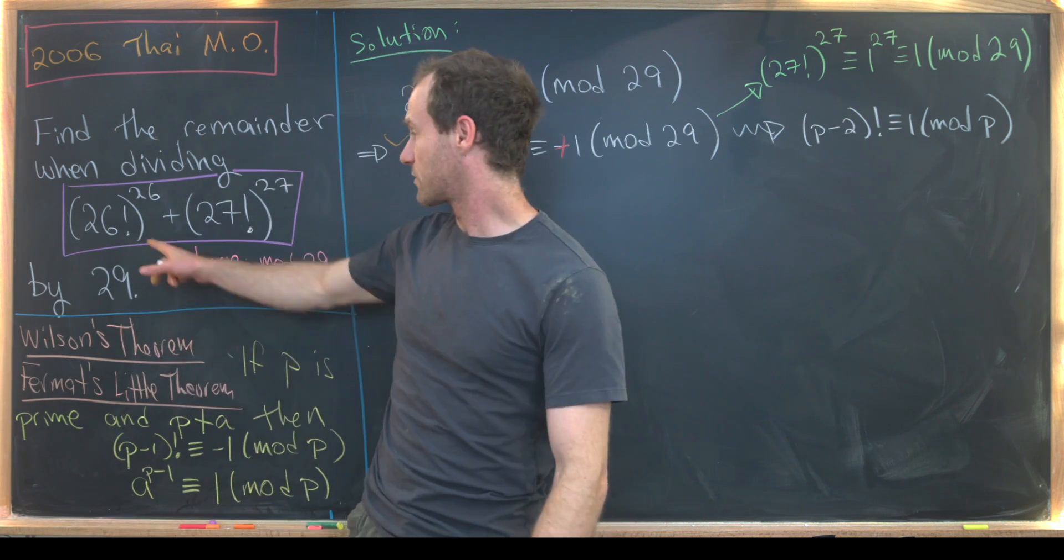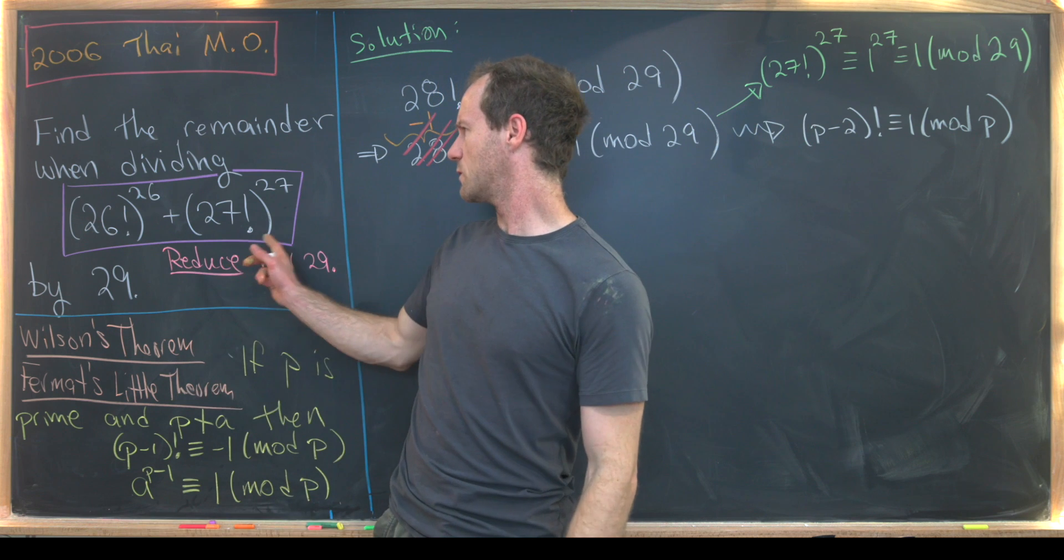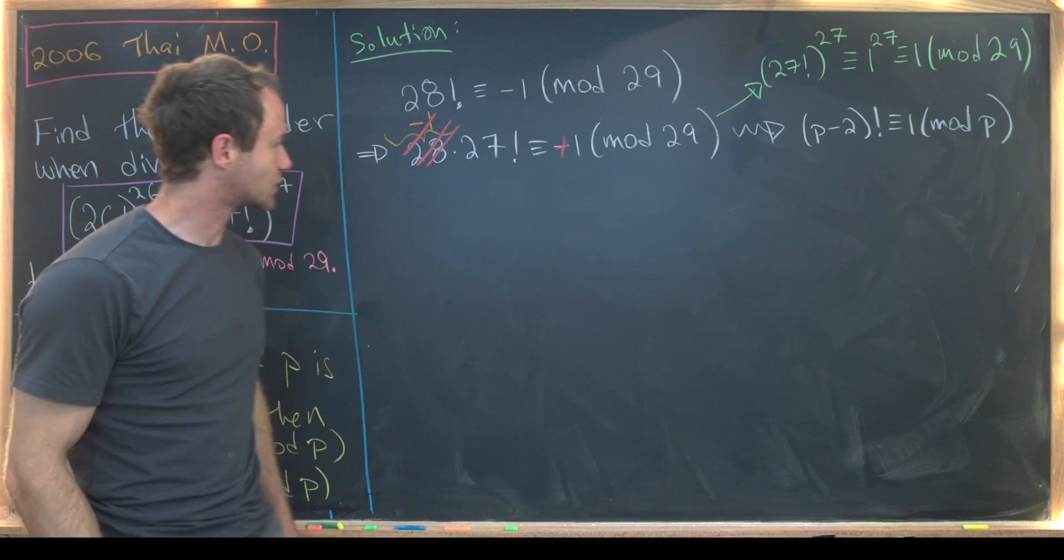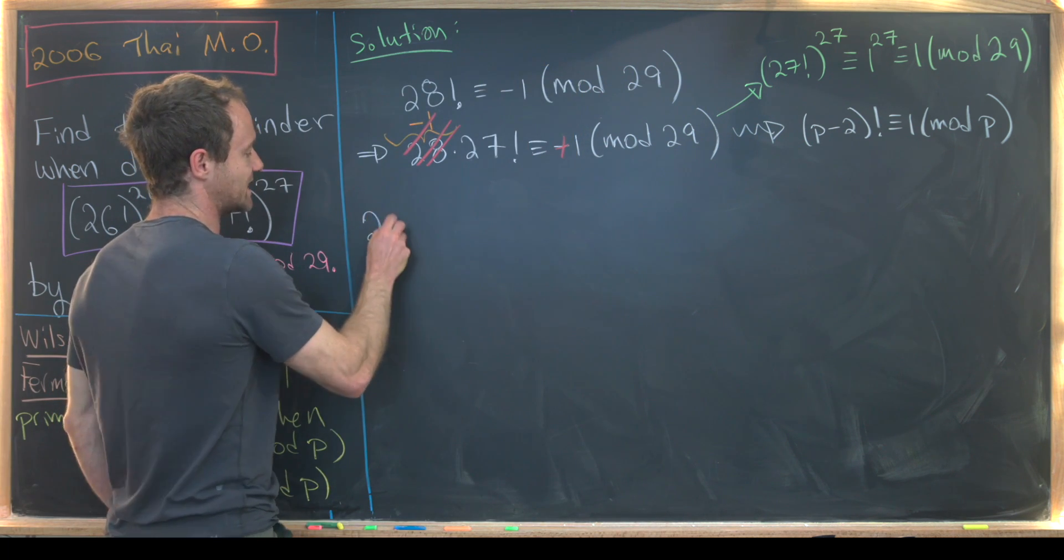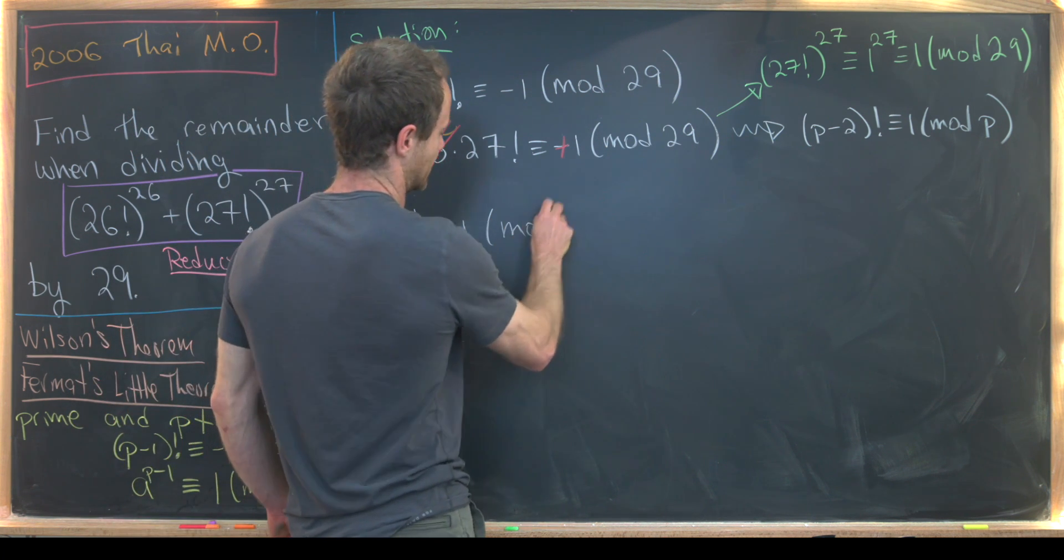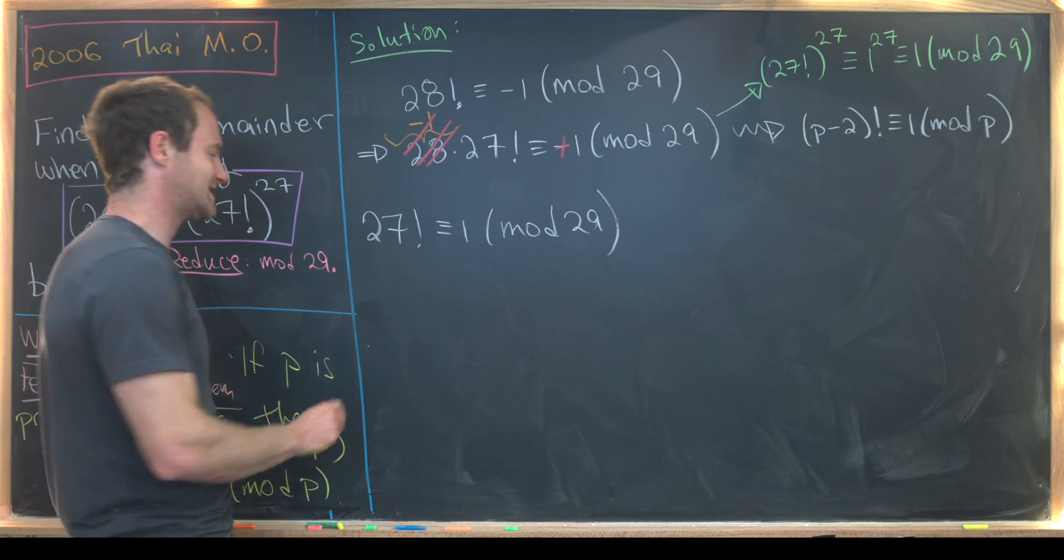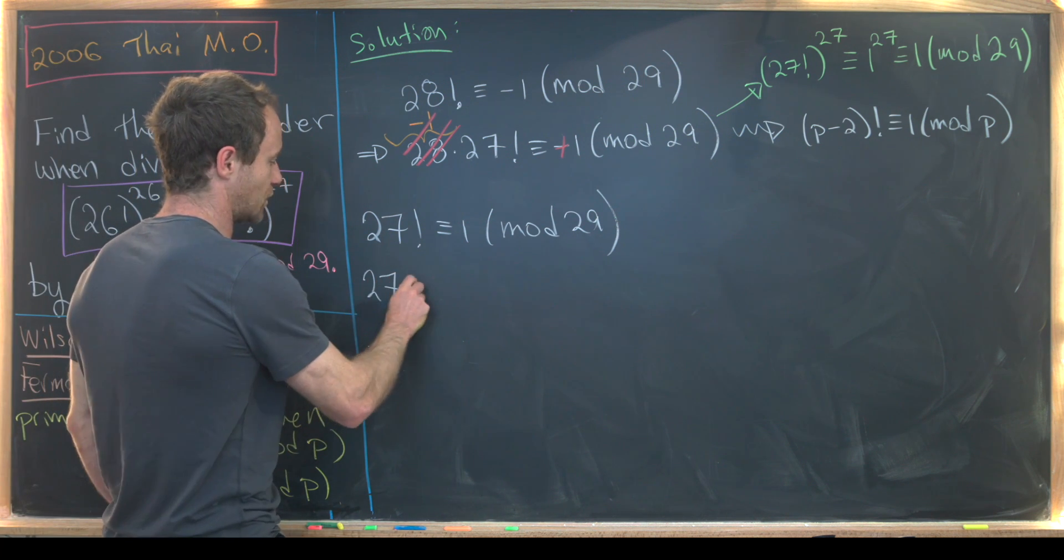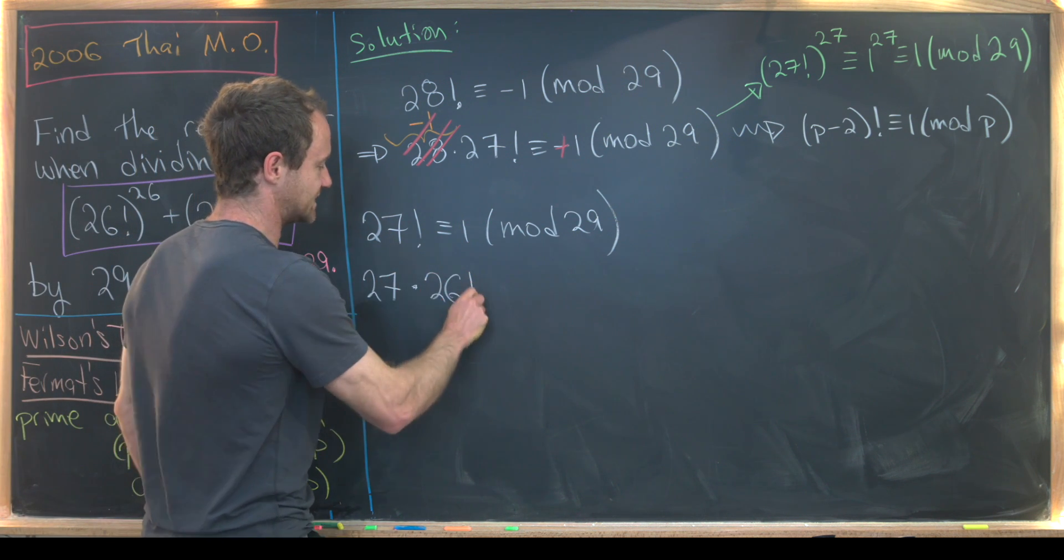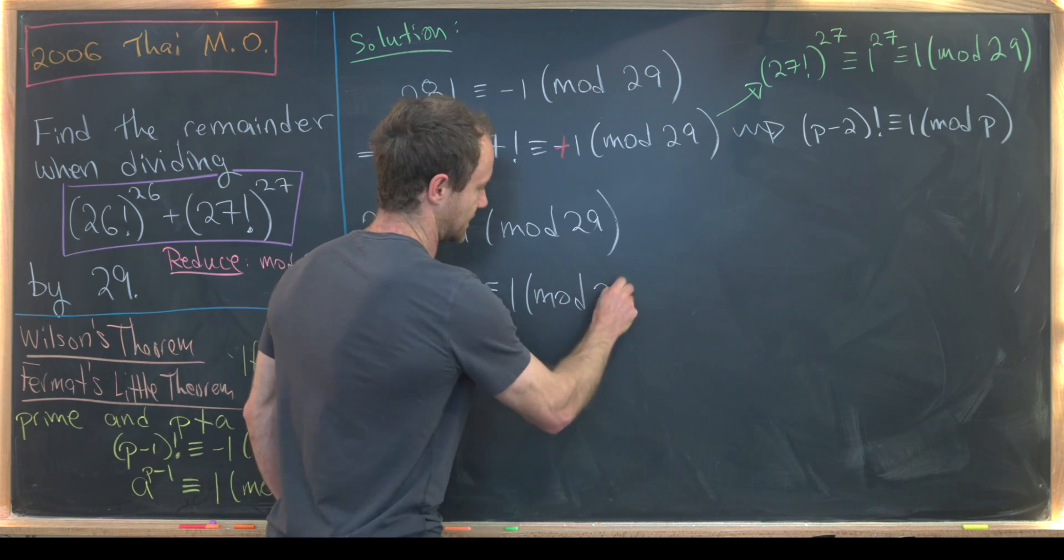Now let's look at the other portion, which is 26 factorial. And luckily, we can use what we just found out about 27 factorial. So let's move on to that. So we've got 27 factorial is congruent to 1 mod 29. I'll write that down. Then I'll factor a 27 out. So we've got 27 times 26 factorial is congruent to 1 mod 29.